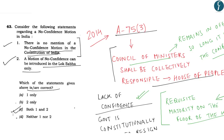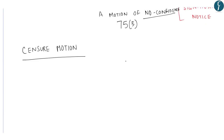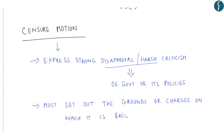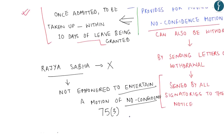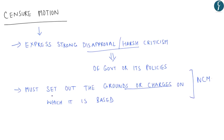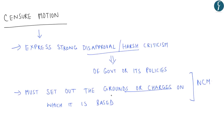I hope any further question appearing in your prelims examination regarding no confidence motion, you will be confidently able to solve. Now, with respect to censure motion, it is a motion to express strong disapproval or harsh criticism of the government or any of its policies. A censure motion must set out the grounds or charges on which it is based, whereas in the no confidence motion, no particular grounds or charges are required.